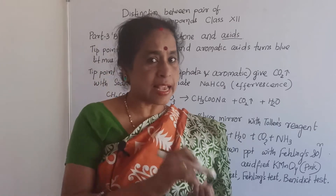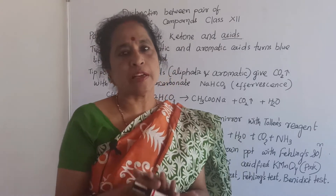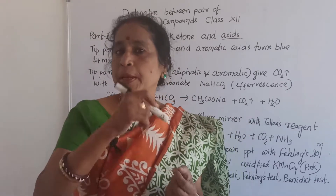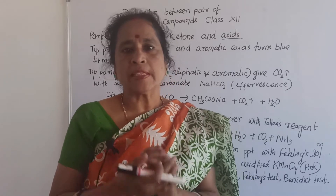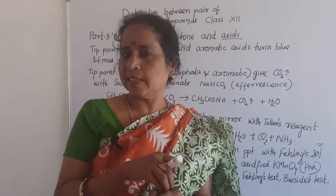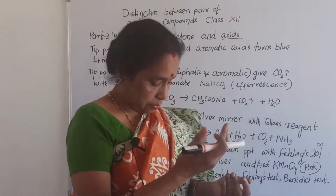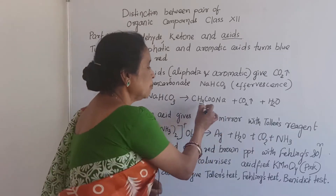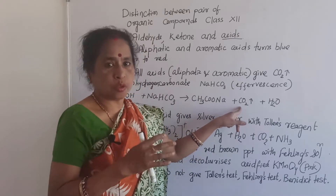Point 2: All acids react with sodium hydrogen carbonate (also known as sodium bicarbonate, NaHCO3) and give carbon dioxide. You can observe effervescence taking place. If you take acetic acid or formic acid and add sodium hydrogen carbonate, immediately effervescence takes place and you can feel gas coming from the acid rising inside the test tube. The products are sodium acetate (CH3COONa) and carbon dioxide.